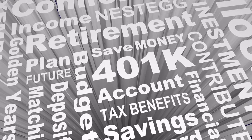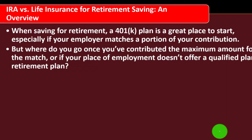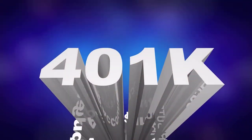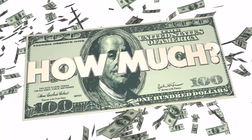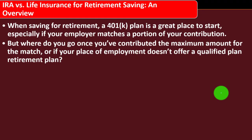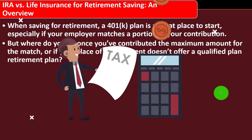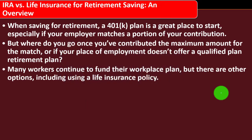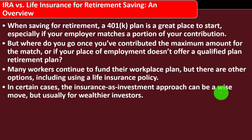The 401k plan offers significant tax savings and is less complex than co-mingling insurance with investment, since buying term insurance and investing in a 401k keeps things clearly separated. But where do you go once you've contributed the maximum or if your employer doesn't offer a qualified retirement plan? If you've maxed out your 401k contributions, it might be advantageous to consider more complex insurance strategies to get some tax benefits — though this is probably more relevant for wealthier individuals.